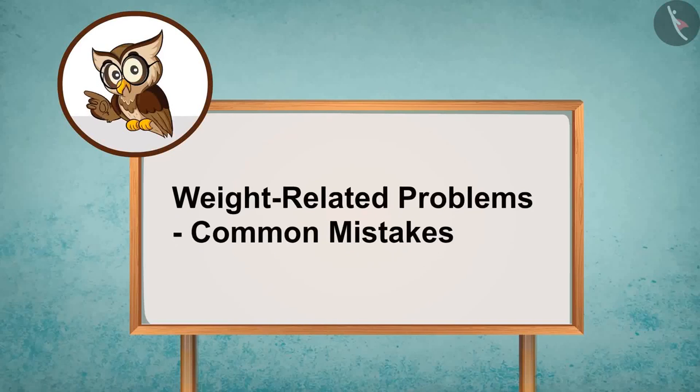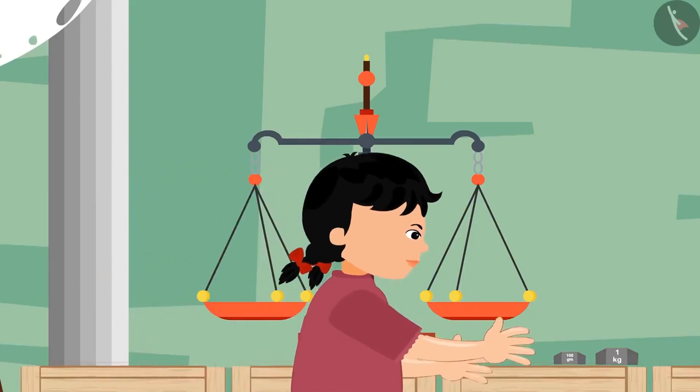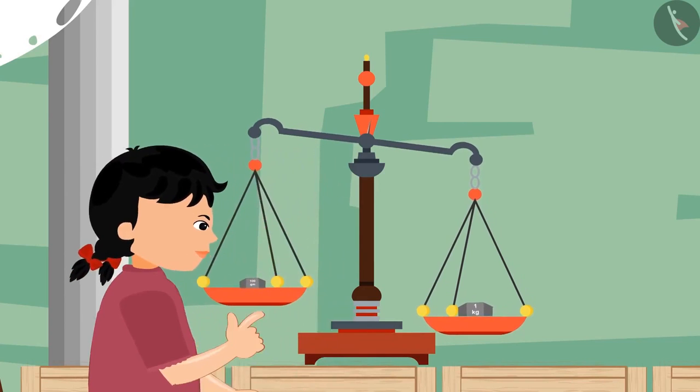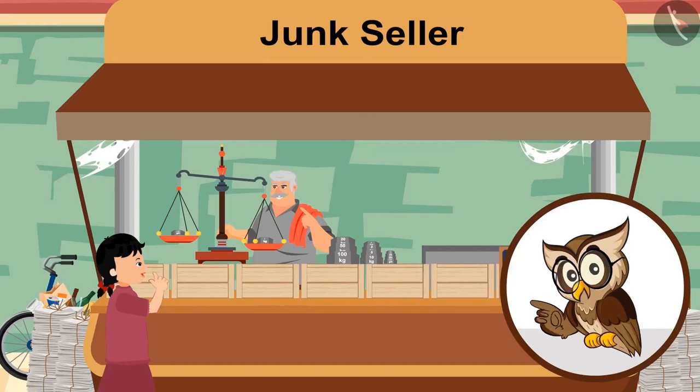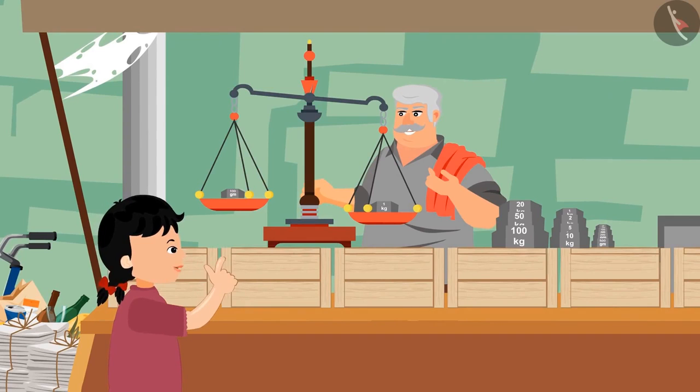Weight-related problems. Common Mistakes. Hey kids, in this video, we will learn about some common mistakes while measuring weight using the weighing scale. Come, let's see what Neetu is doing today. She has put some stones on the weighing scale and is looking a bit worried. Birju Uncle is looking at her. Hey kid, what happened? What are you doing? Uncle, see, I am placing the weighing stones on both the sides. Still, the needle is not getting balanced.